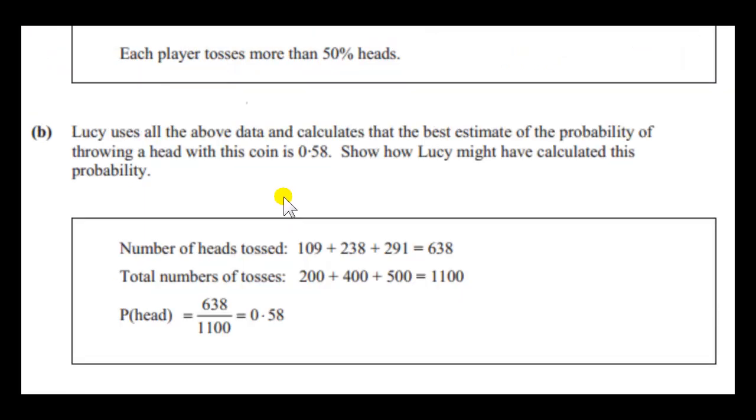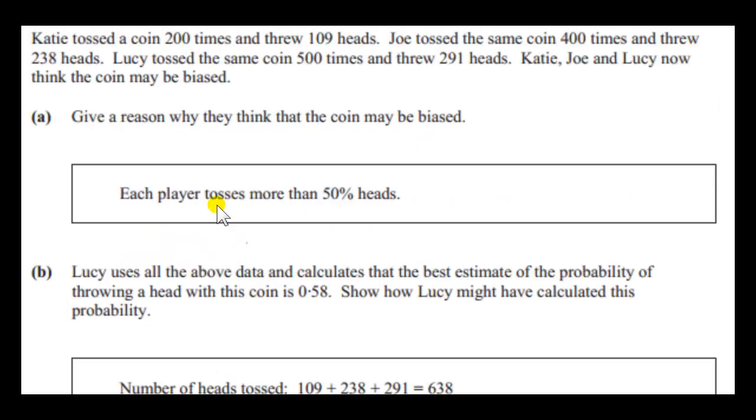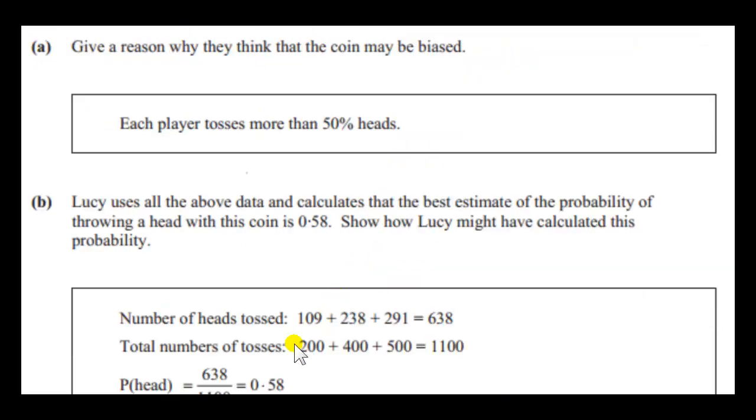Okay so let's consider the best estimate of the probability of throwing heads. So what we need to do is pool all the throws together, all the tosses together. So the coin was tossed 200 times, 400 times and 500 times. If we just add these three numbers together, that gives us the total number of tosses. That's 1100.